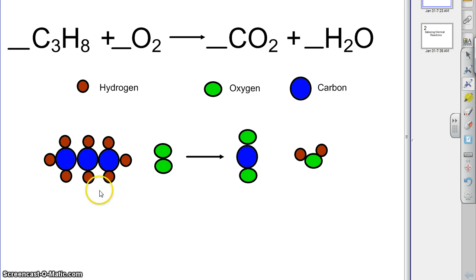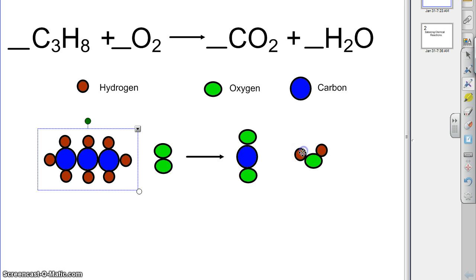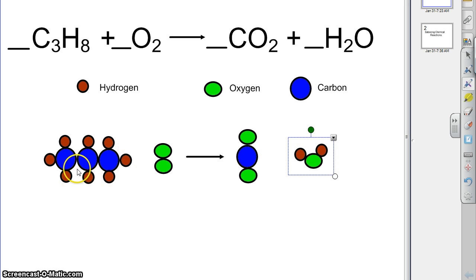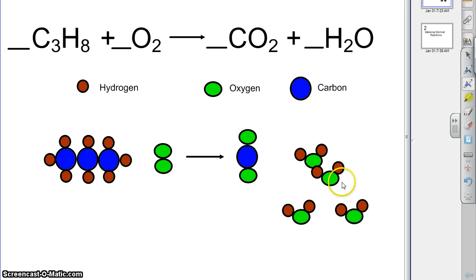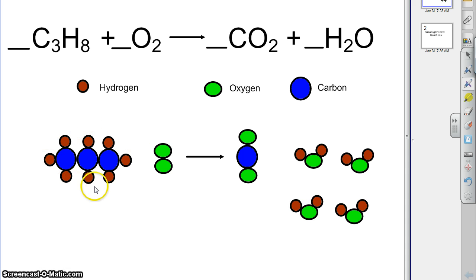And I think it's fairly obvious that we can't. If we just look at the hydrogens — the red ones — there are eight of them right here and only two over here. So if we're going to start with eight hydrogens, we cannot make just one water molecule. We're going to have to make four of them, because now we've distributed all eight of those hydrogens over here. So now there are eight on each side.